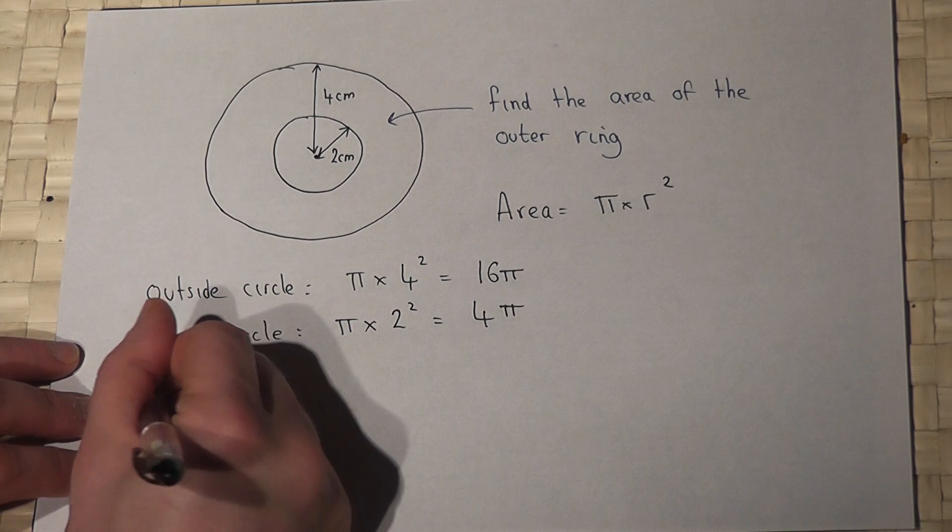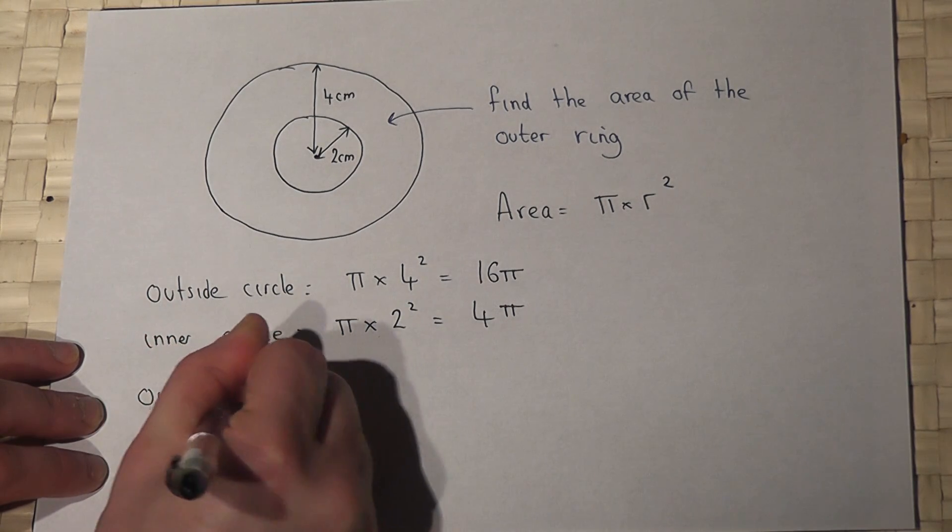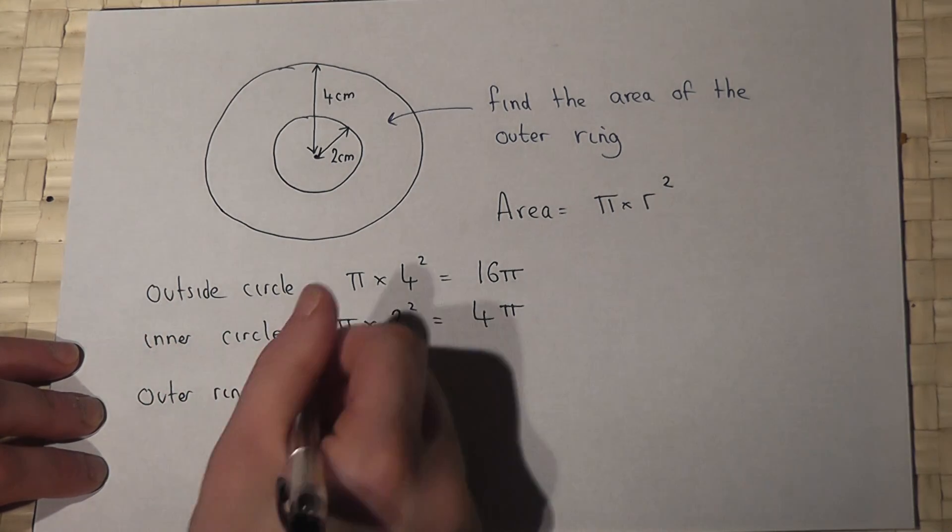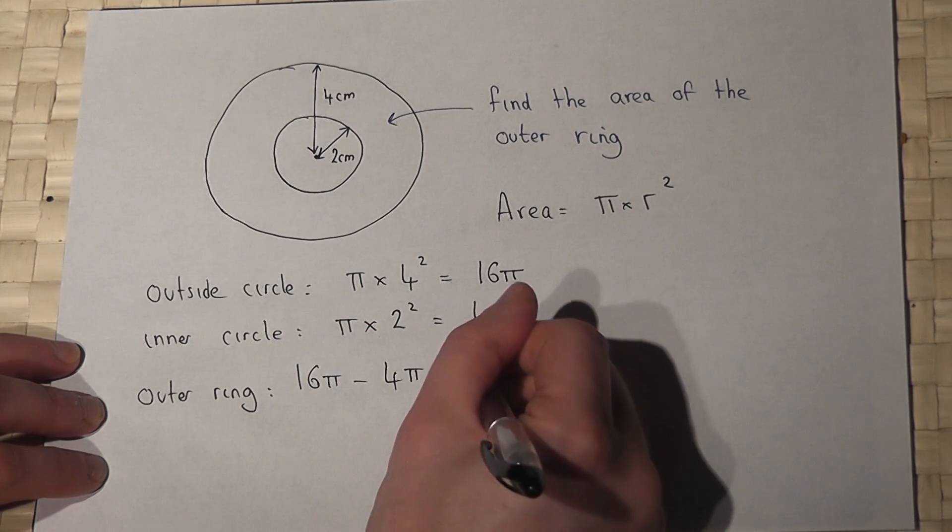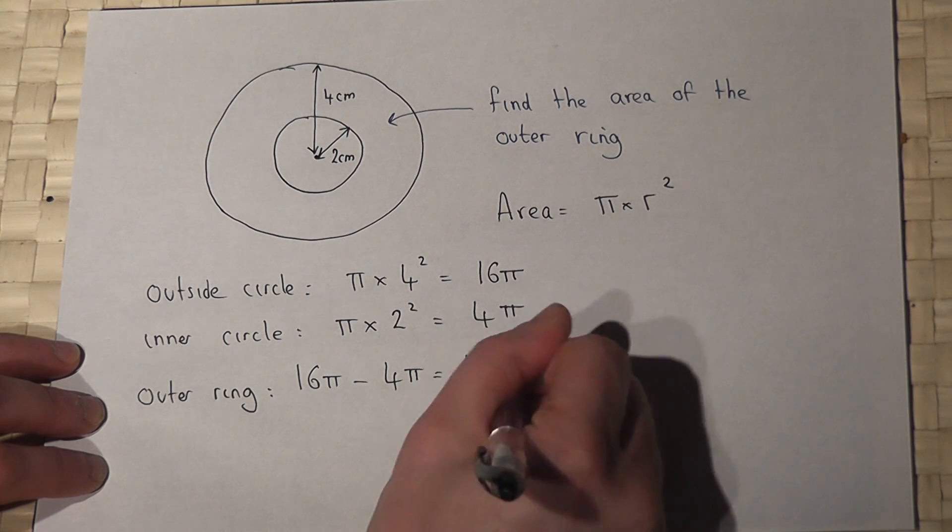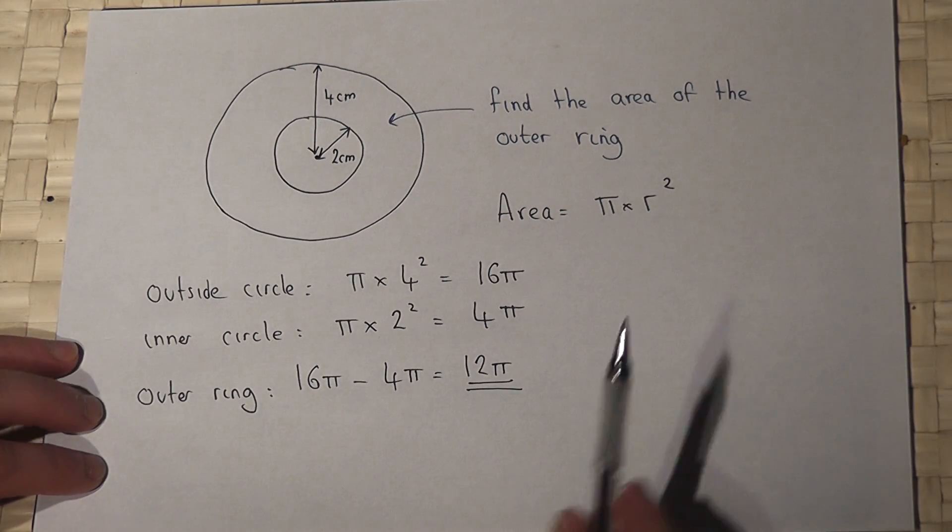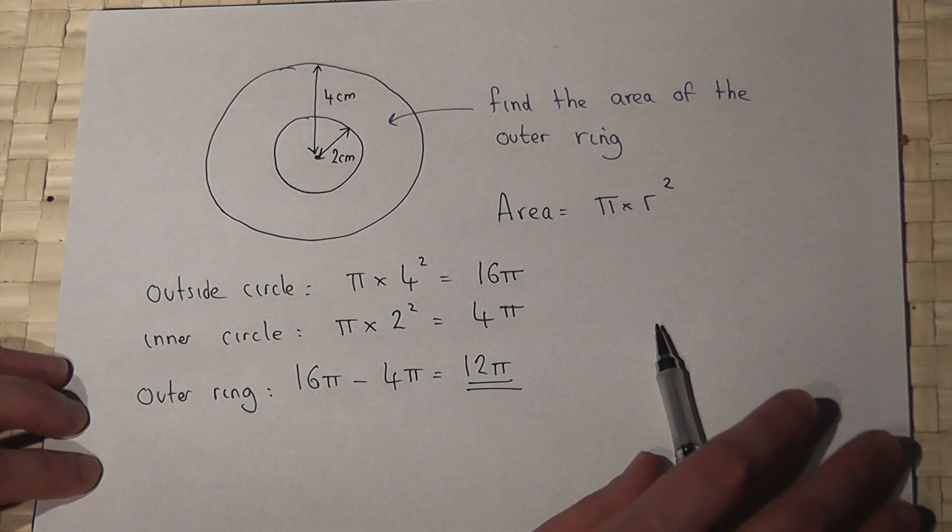So therefore the outer ring has an area of the outer circle take away the inner circle, which is 12 pi. So the answer is 12 pi in terms of pi.